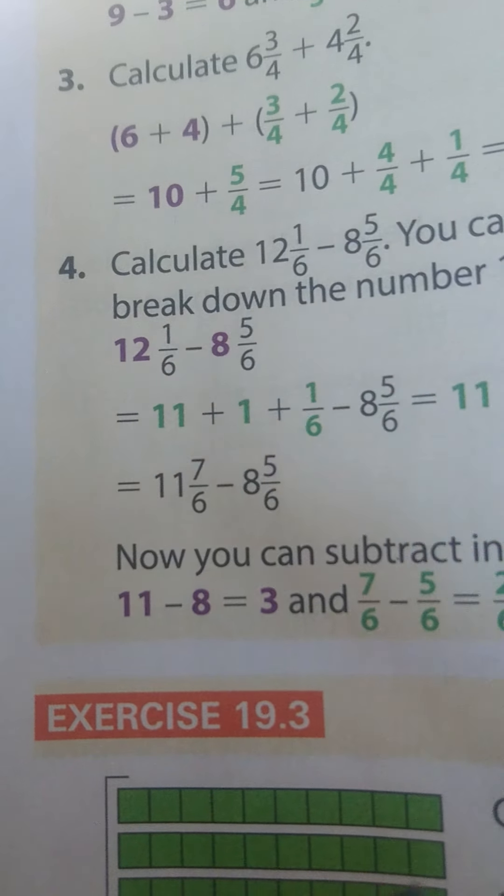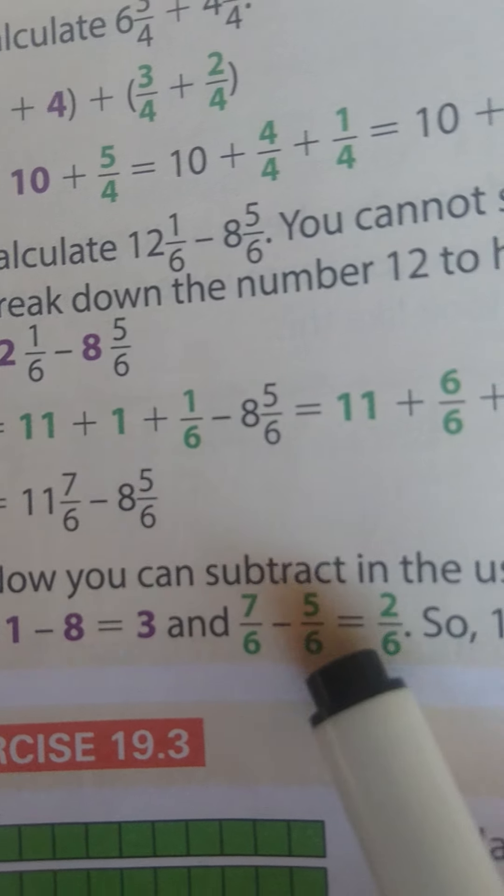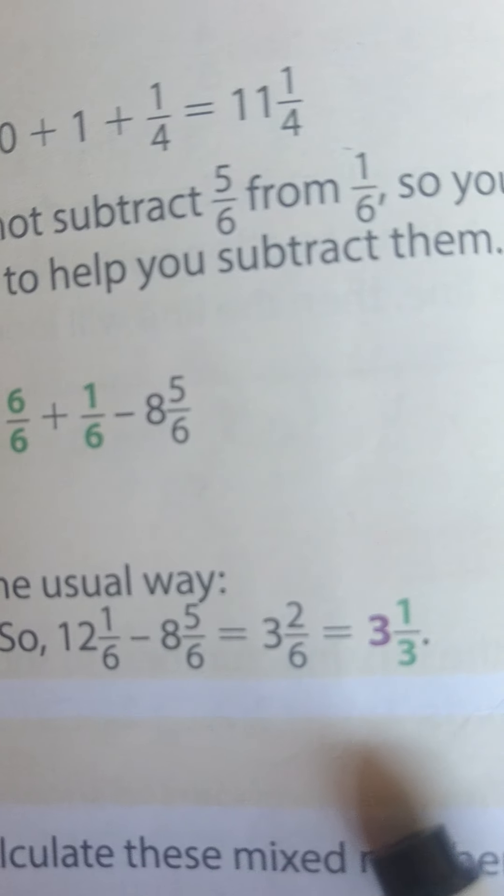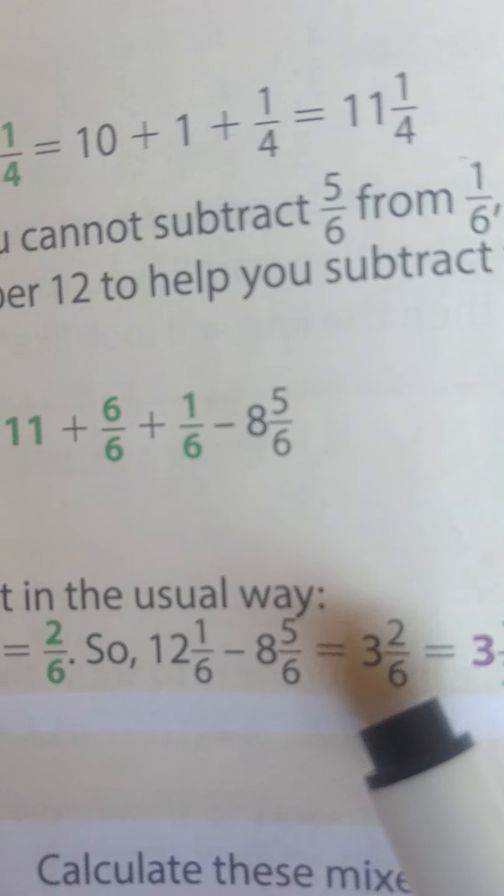Now we can do our calculation as normal. 11 - 8 will give us 3 and ⁷⁄₆ - ⅚ will give us ²⁄₆. Therefore, our answer is 3²⁄₆.